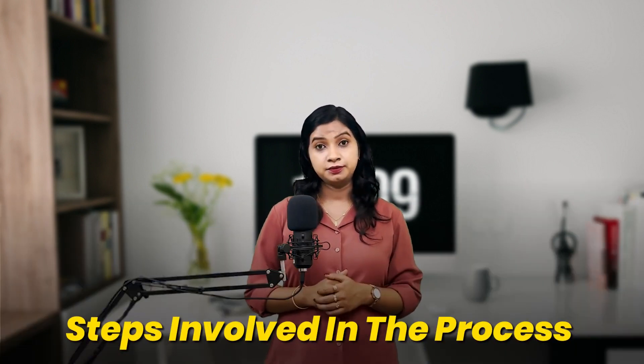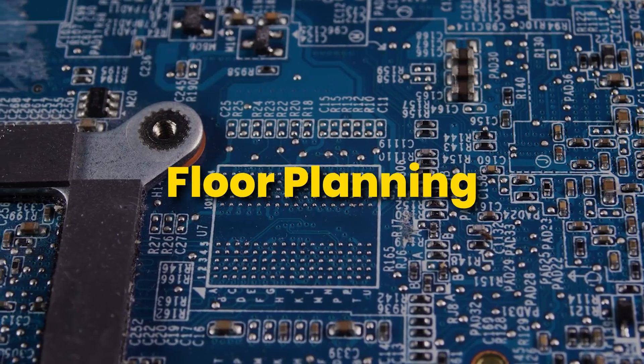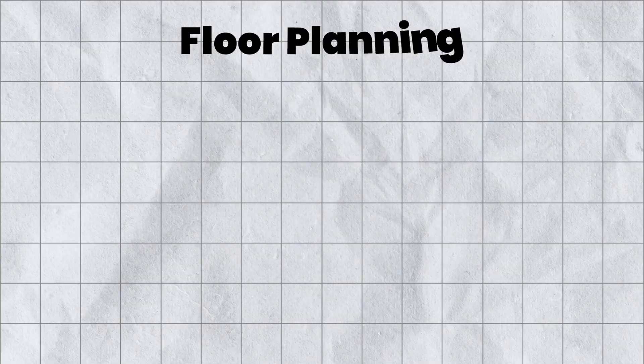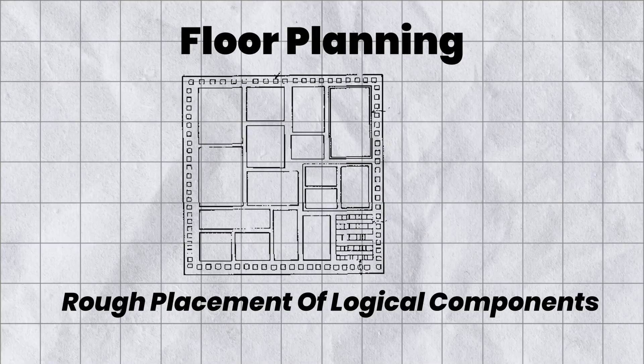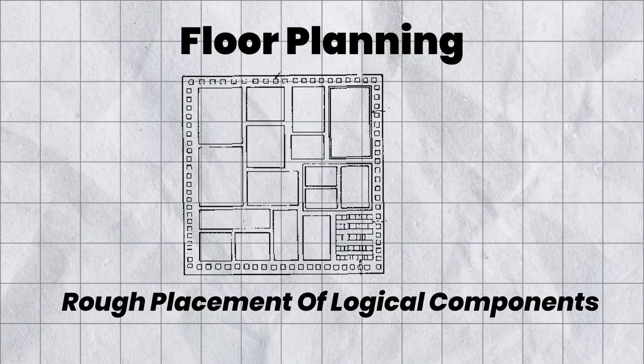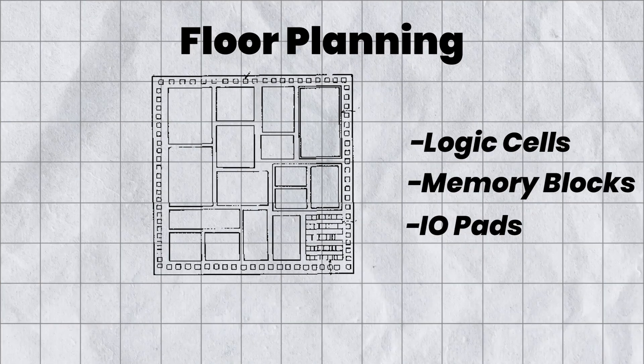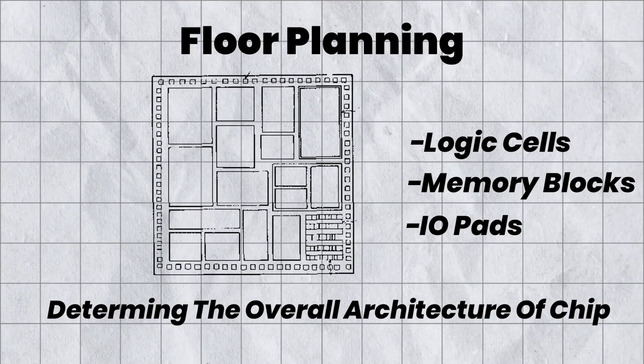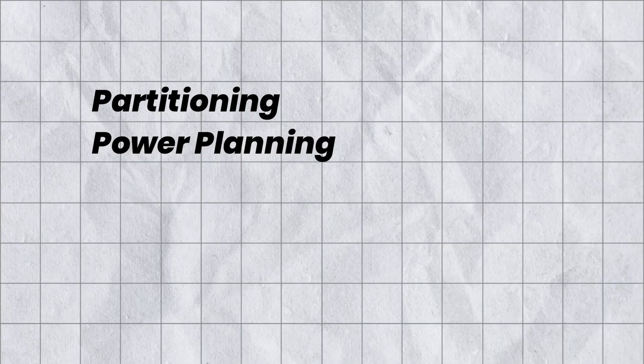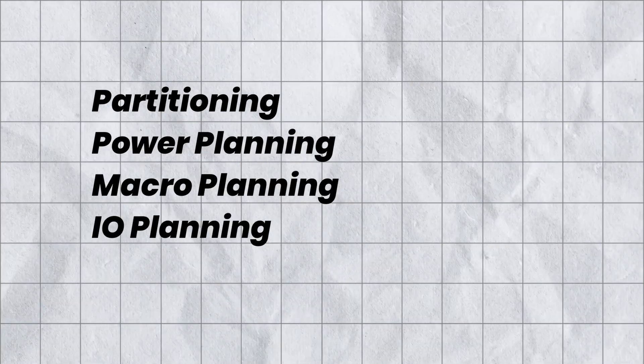Now talking about the steps involved. Starting with floor planning — in floor planning, we determine the rough placement of logical components like logic cells, memory blocks, and IO pads, and determine the overall architecture of the chip. The primary goal of floor planning is to optimize the chip area. For that, we perform partitioning, power planning, macro planning, and IO planning.